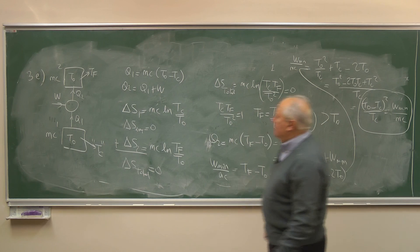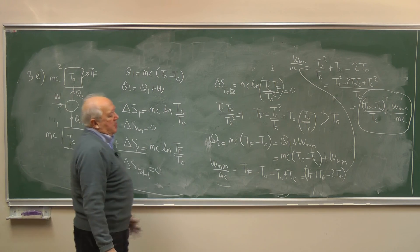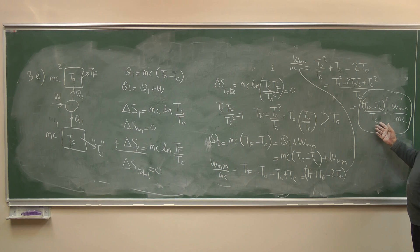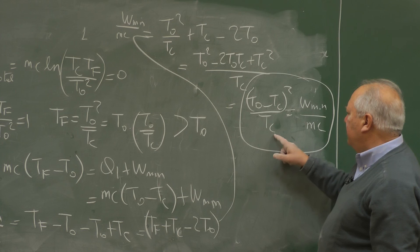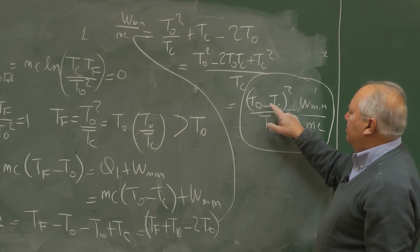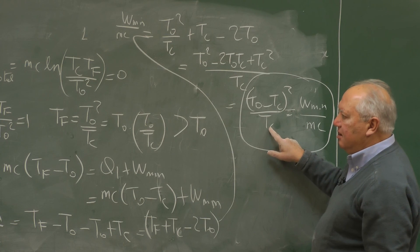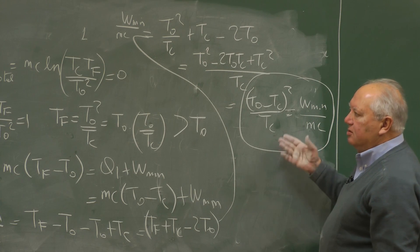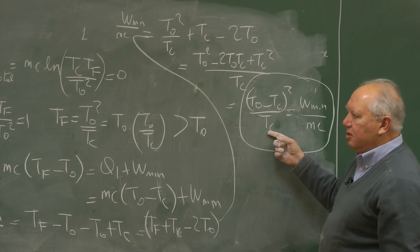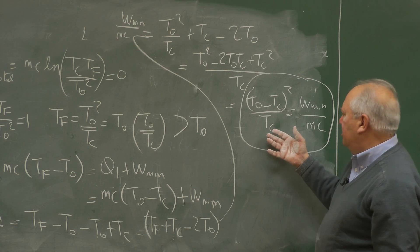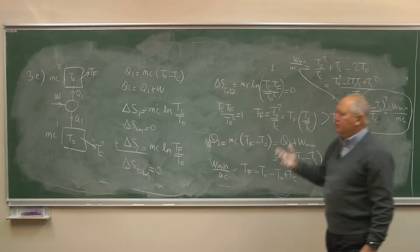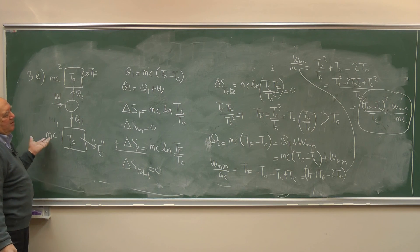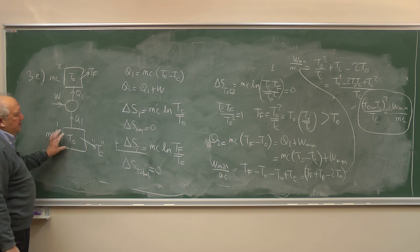We also found the final temperature of the second block that receives the heat. I want to add one more thing: if you want to make Tc colder and colder, if you make Tc smaller and smaller, this expression gets bigger because of the 1 over Tc factor. So W is getting bigger and bigger. In principle, if you let Tc go towards zero, absolute zero, you have to supply an infinite amount of work even at the minimum. So this also shows that it is really very hard to get to very low temperatures.